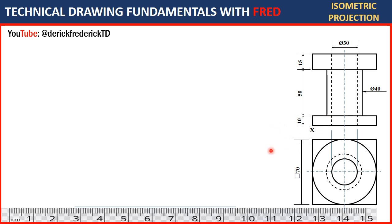You need to understand that the total height of this drawing is 75 — if you add 50, 10, and 15 that gives you 75. The receding line to the right is 70 and the receding line to the left is 70, as you can see from the plan. So this is a 70 by 70 square base structure.